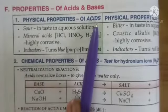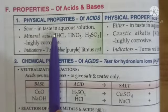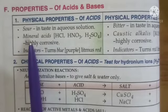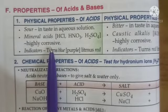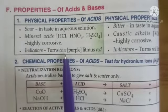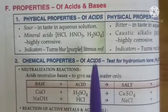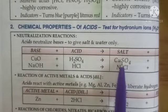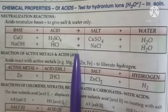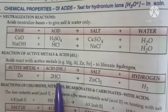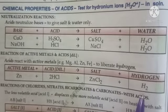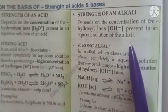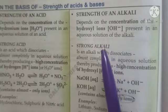The physical properties of acids: acids are always sour in taste in aqueous solution, but never try to taste any acid. Strong acids or mineral acids are highly corrosive in nature. Indicator-wise, acids always turn blue litmus paper to red. The chemical properties: when acids react with bases, they give salt and water — this reaction is called neutralization. When metals react with dilute acids, they give salt and hydrogen gas.